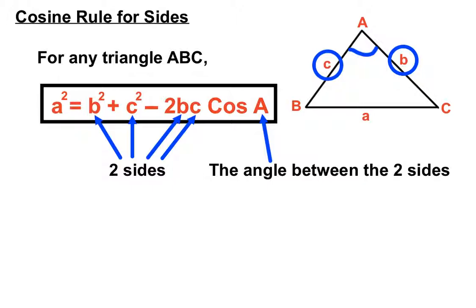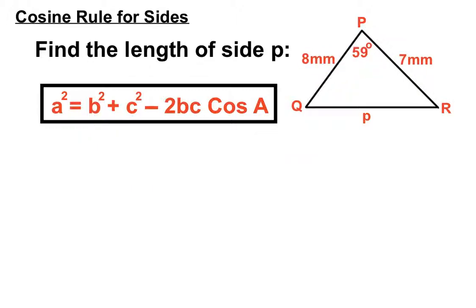So we'll write up the formula on the top line, and underneath we're going to put all the numbers in from the question as best we can. Okay, if we're asked to find the length of side P in this example here, we've got two sides, eight millimeters and seven millimeters. And the angle in between it, what we call the included angle, is 59 degrees.